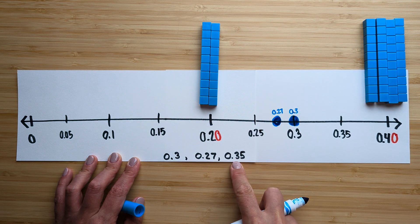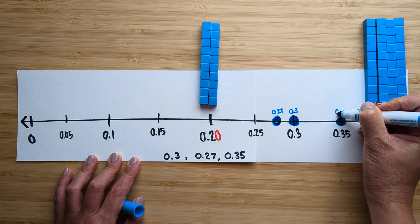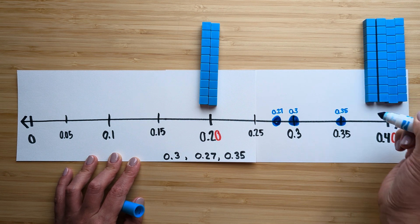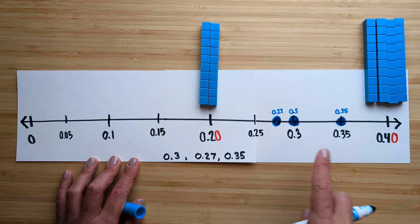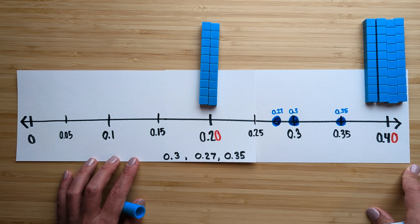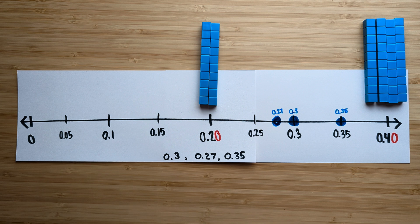And then I have thirty five hundredths. Thirty five hundredths. So if you ever need to order decimals from least to greatest, a number line is a great tool to use because you can clearly see the relationship between the tenths and the hundredths.